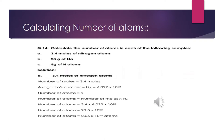You can see how simply we found the number of atoms when number of moles are given. You might have noticed in all of these solved examples that the number of molecules or the number of atoms present in certain moles of a substance does not depend on the type of the substance — it only depends on how many moles of a substance are given. In each example, we simply multiplied the number of moles with Avogadro's number.